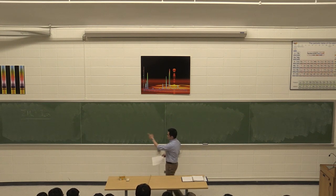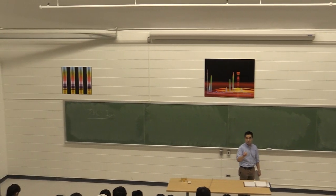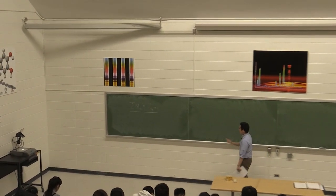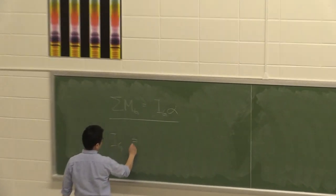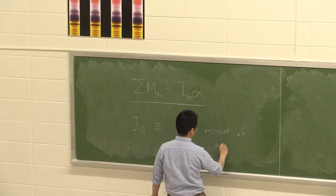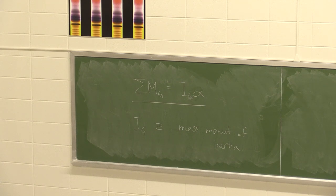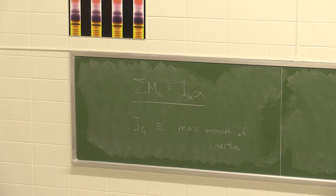I introduced this new concept last class: the sum of moments about a point G, the center of mass of an object, is equal to IG times alpha. IG is defined as what we call the mass moment of inertia.